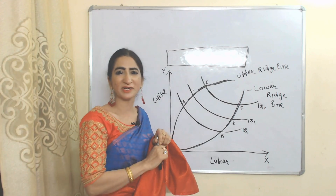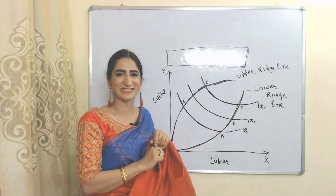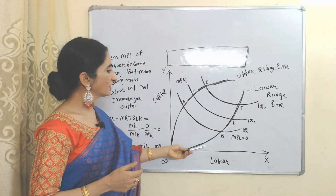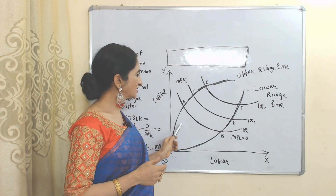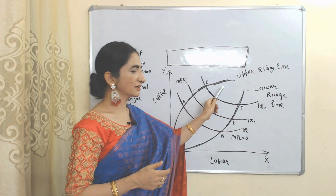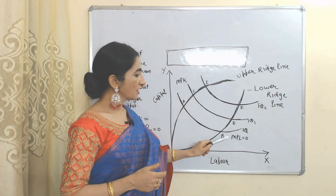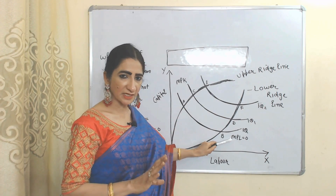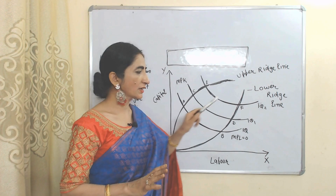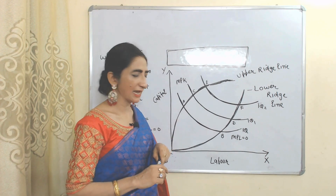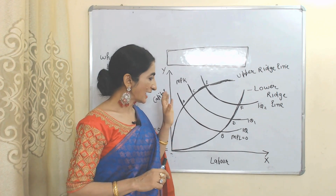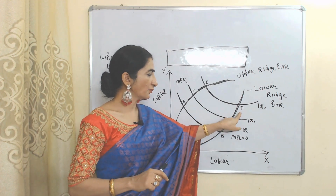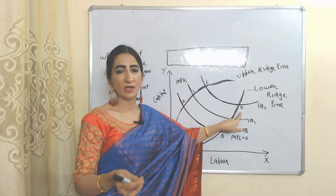So we can say that ridgelines are boundaries of the isoquant which separately define which one is the efficient region and which one is not. This is our lower ridgeline and this is our upper ridgeline. The marginal product of labor is zero on the lower ridgeline — that means at points B, D, and E, the marginal product of labor is zero.